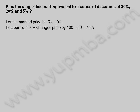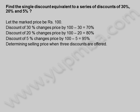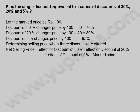Discount of 30% changes price by 100-30, is equal to 70%. Discount of 20% changes price by 100-20, is equal to 80%. Discount of 5% changes price by 100-5, is equal to 95%. Determining selling price when 3 discounts are offered.